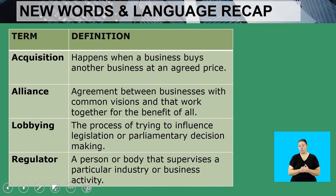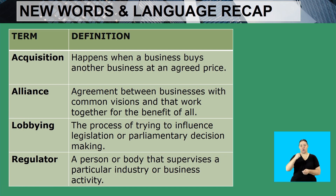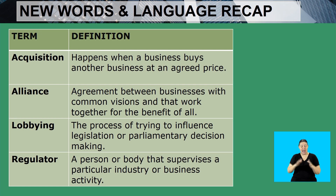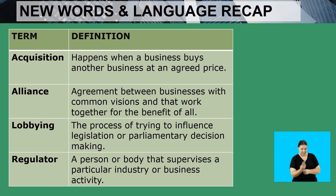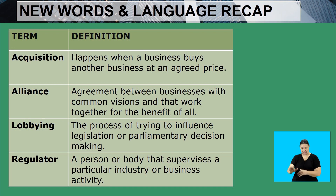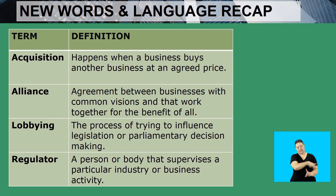Now let's look at the new words and language recap. Acquisition: it happens when a business buys another business at an agreed price. Alliance: an agreement between businesses with common visions that work together for the benefit of all. Lobbying: the process of trying to influence legislation or parliamentary decision making. Regulator: a person or body that supervises a particular industry or business activity.